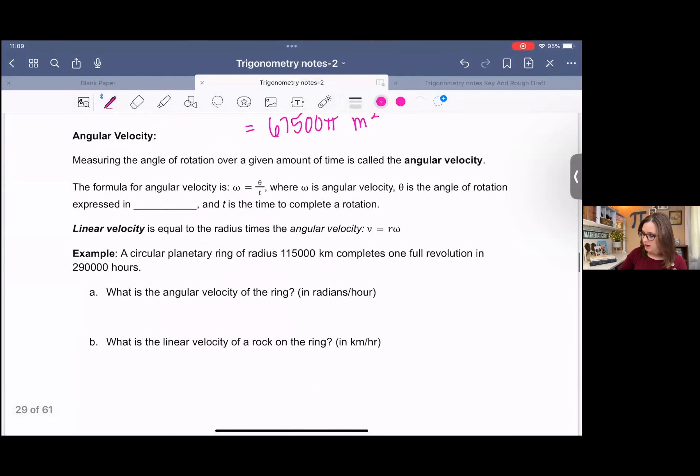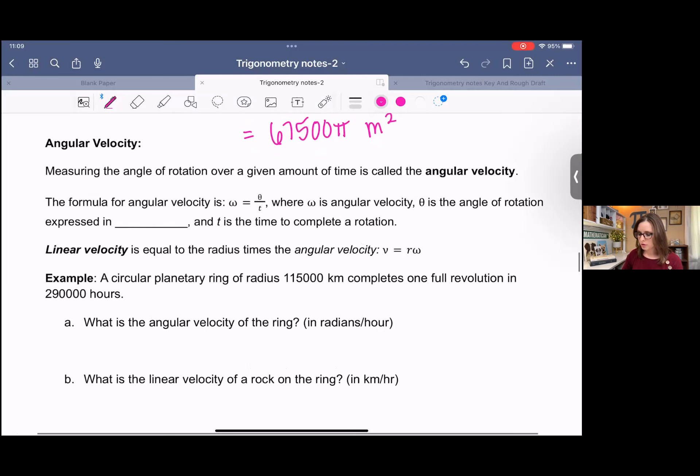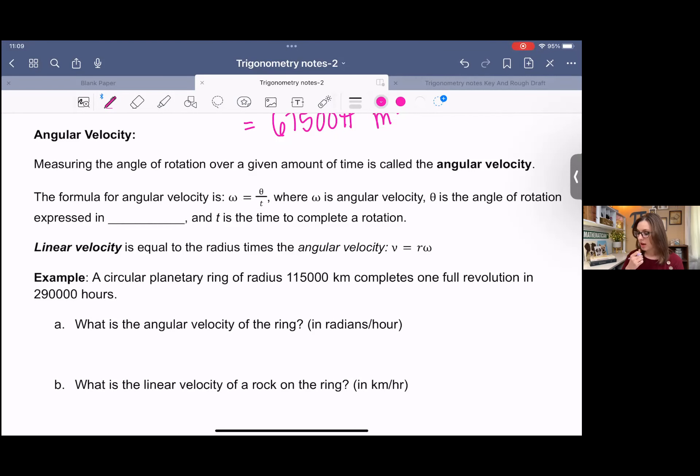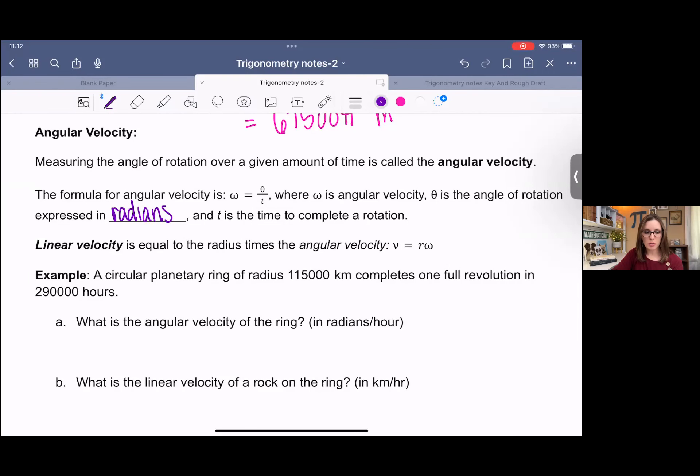Then we have angular velocity as an application problem. Measuring the angle of rotation over a given amount of time is called the angular velocity. The formula for angular velocity looks like a little w equals theta over t, where that is angular velocity. Theta is the angle of rotation expressed in radians, and t is the time to complete a rotation. Then once we know angular velocity, we can use that to find linear velocity, which is equal to the radius times angular velocity.